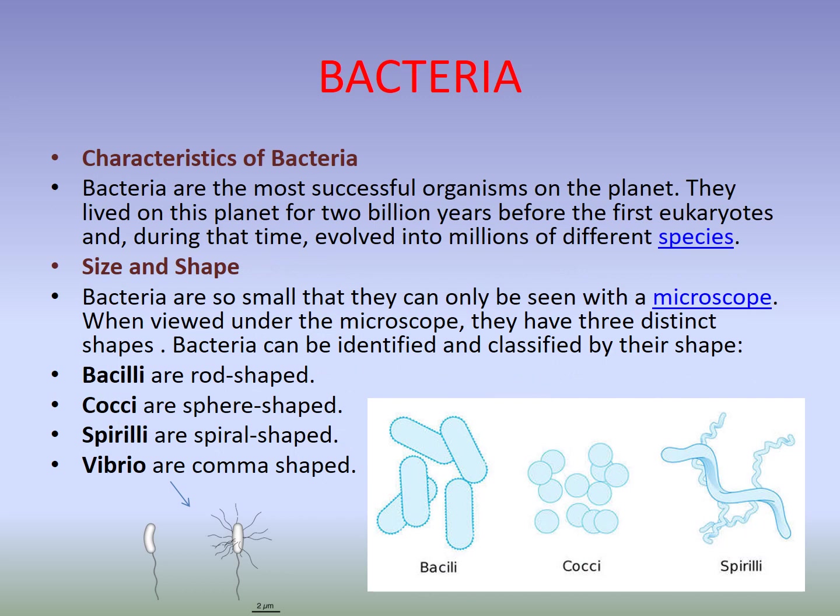Characteristics of bacteria: bacteria are the most successful organisms on the planet. They lived on this planet for 2 billion years, before the first eukaryote even appeared. About eukaryotes — you will learn in detail in the chapter on cells, which you will read later. A brief introduction to the term eukaryote: eukaryotes means organisms having a true nucleus. 'Eu' means true, 'karion' means nucleus. Organisms having a true nucleus are known as eukaryotes.